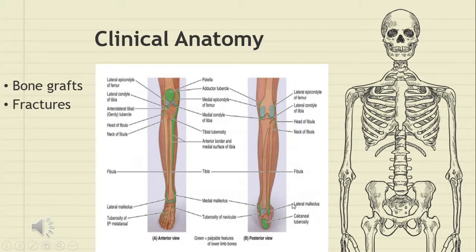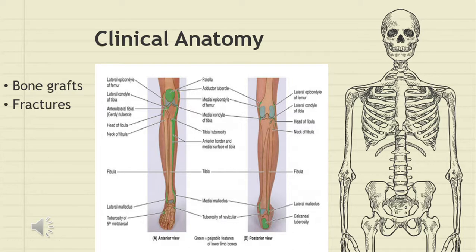The head of fibula and the lateral malleolus are palpable or subcutaneous parts. Palpable parts of a bone are usually suitable for taking biopsies. As fibula is not a weight-bearing bone, part of it can be used as a bone graft, replacing other bones in the upper or lower limb where bones are removed due to tumor, necrosis, or trauma. Fractures will be discussed in the next slide.